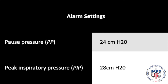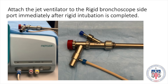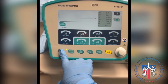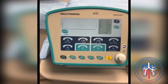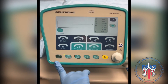Alarm settings are set at a pause pressure of 24 centimeters of water and peak inspiratory pressure of 28 centimeters of water. The alarm settings are shown here. Attach the jet ventilator to the rigid bronchoscope side port immediately after rigid intubation is completed. Press the start button to initiate ventilation and press again to stop ventilation.